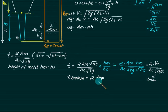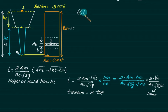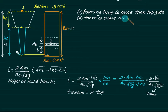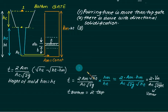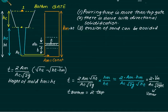So for this special case, the time required for the bottom gate is 2 times the time required for the top gate. Therefore, the top gate is more efficient. The bottom gate pouring time is more than the top gate, which is undesired, and there is an issue with directional solidification. However, the advantage is that the velocity enters from the bottom side and does not strike the sand, so erosion is completely avoided.